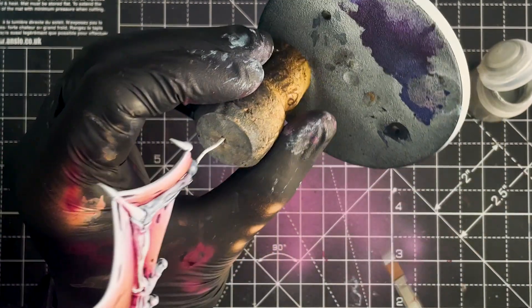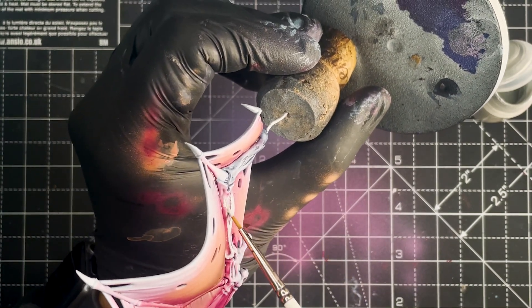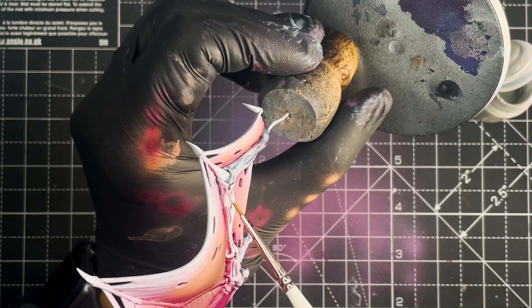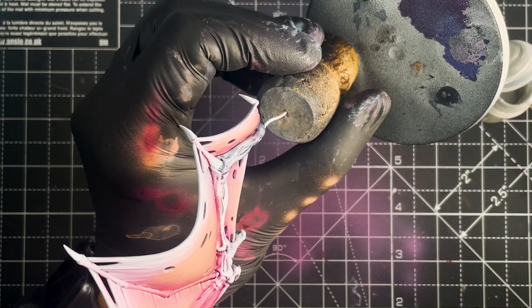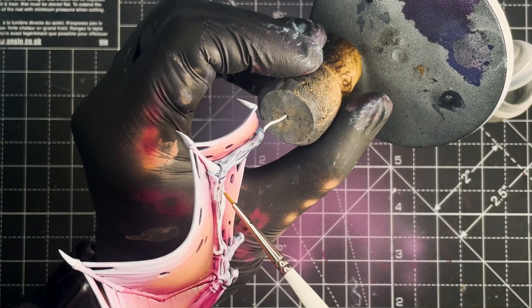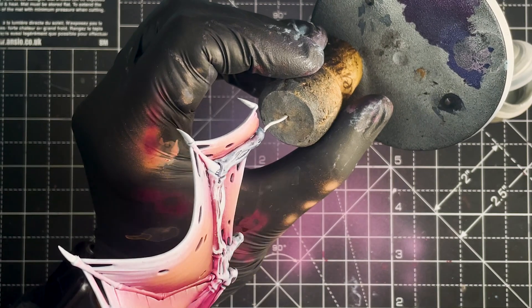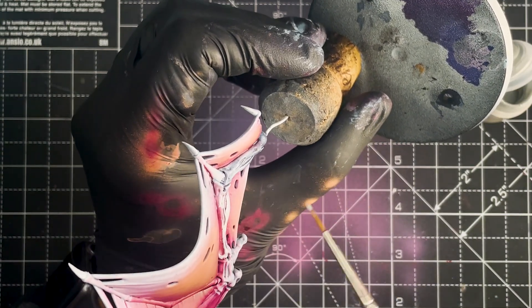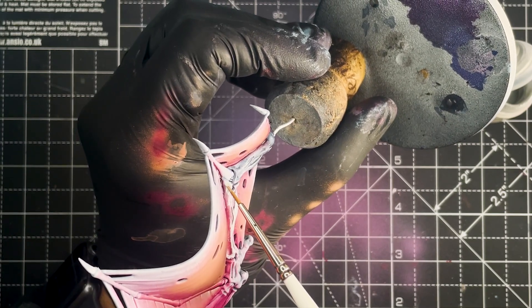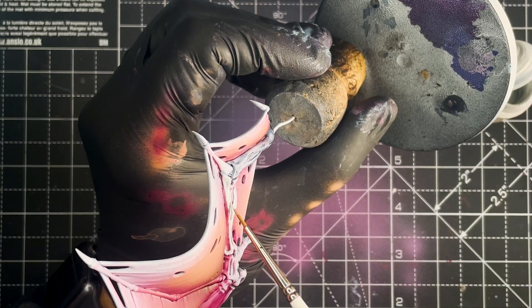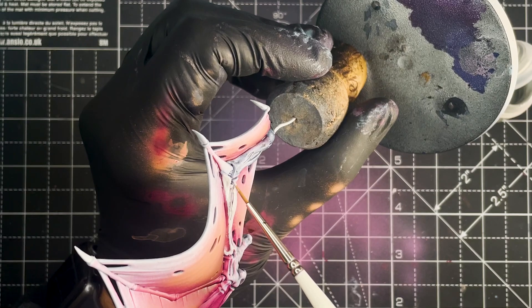And once the wash has fully dried we can then go in with a little bit of a dry brush and go in with some Grey Seer and touch up any of the areas that we had overspray on, specifically the arm and then any of the boned spines that are running through the wing as well. And just take your time here and try not to get any of the white onto the wing itself, but if you do you can always go back in with the Volupus Pink and do some touch ups.